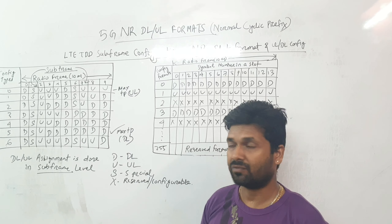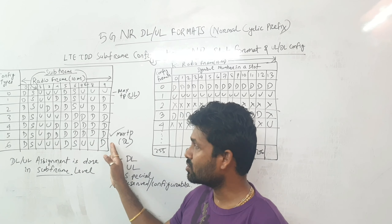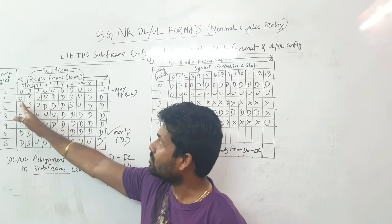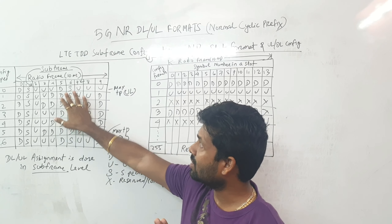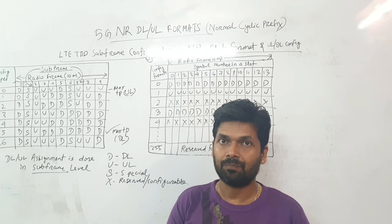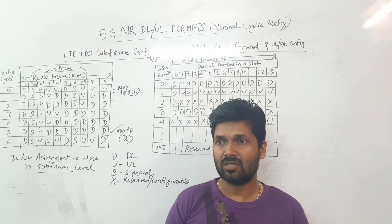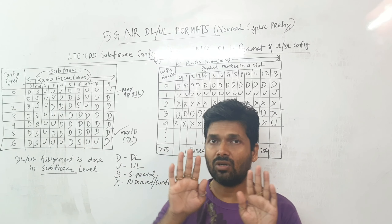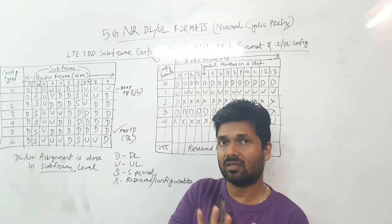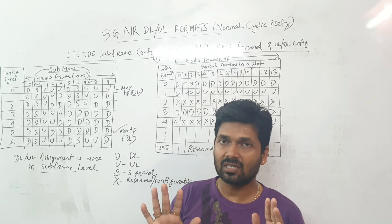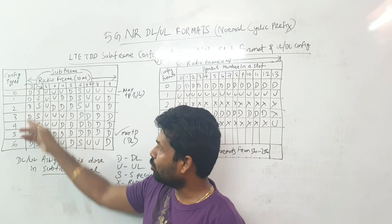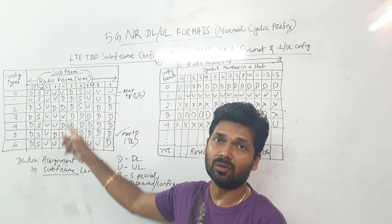For the ten subframes in LTE TDD mode, subframes 0 to 4 form the first half-frame and subframes 5 to 9 form the second half-frame — each half-frame is 5ms, totaling one radio frame of 10ms. Downlink synchronization, secondary synchronization, or broadcast information can be managed at the half-frame level. Uplink/downlink assignment is managed at the subframe level in LTE.